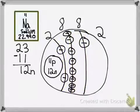Now you have to find the amount of neutrons. To find that, you will take the atomic mass and round it. So 22.990 is closer to 23. So you have 23 minus 11, which is the number of protons, equals 12 neutrons. You put 12 neutrons in the nucleus.